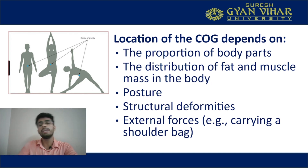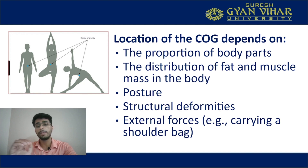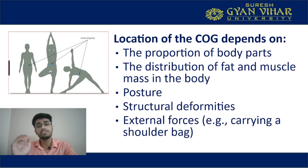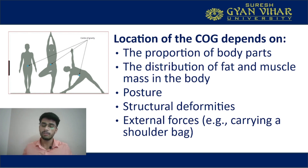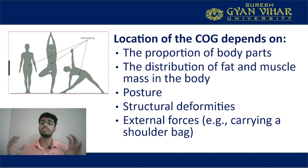The distribution of fat and muscle mass in the body is also important. Females tend to have a lower center of gravity compared to men because they have a wider pelvis and more fat mass located in the thigh and gluteal region. In males, more muscle mass is located in the upper part of the body. Where the distribution of fat and muscle mass is more, the center of gravity will shift in that direction.